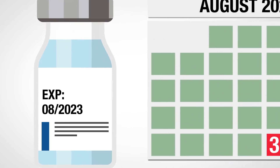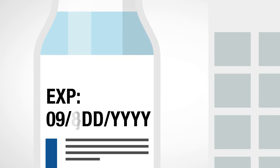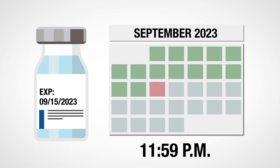In the case of month, day, and year, the vaccine may be used through the specified date. So if September 15, 2023 is on the vial, it may be used through 11:59 p.m. on September 15, 2023.